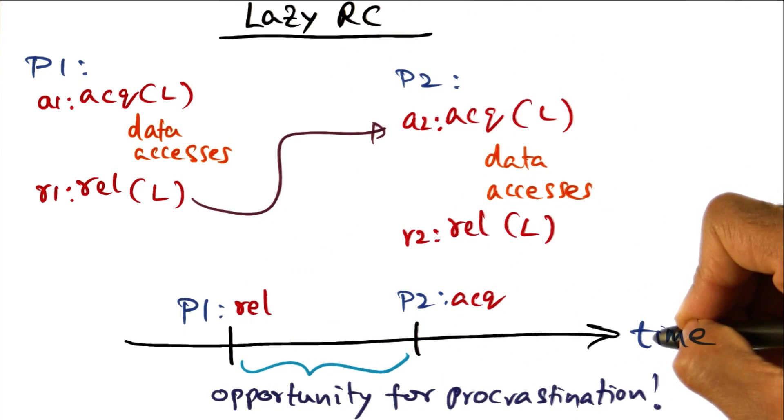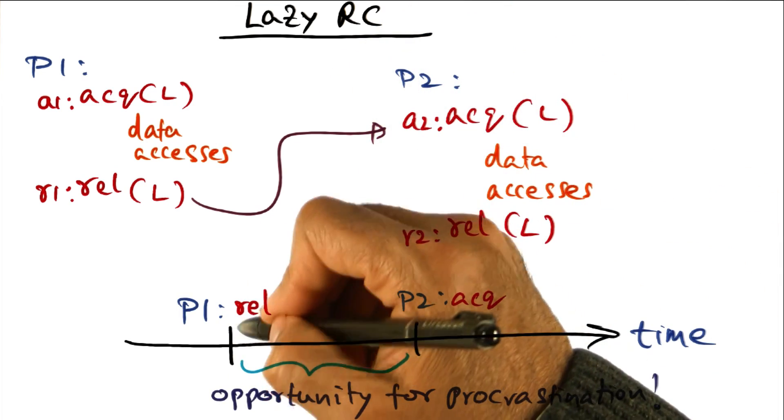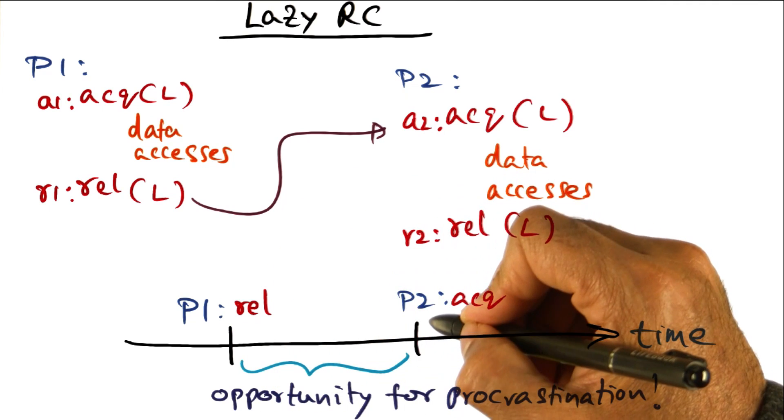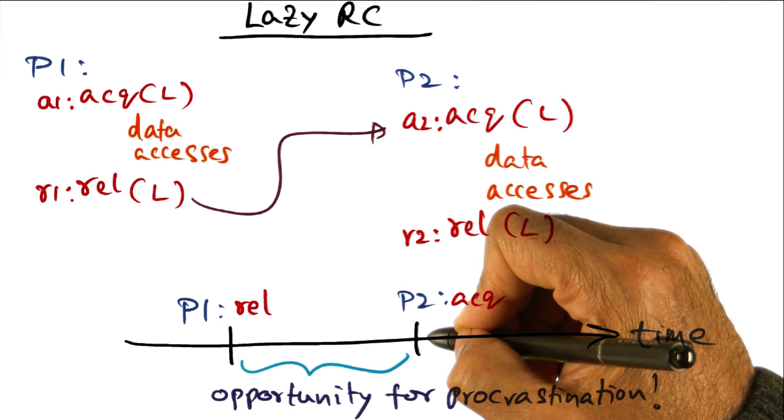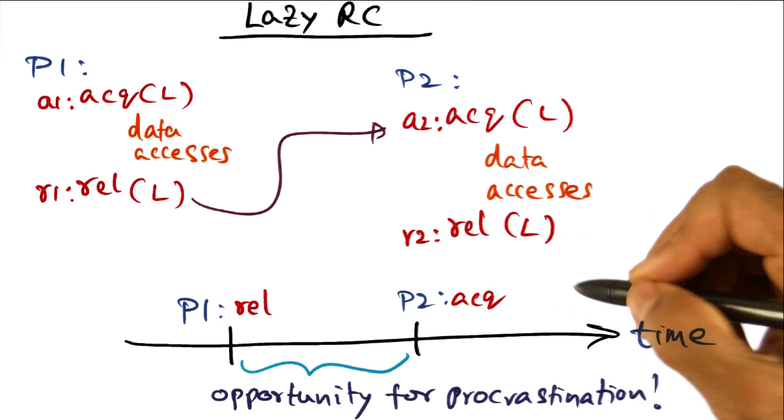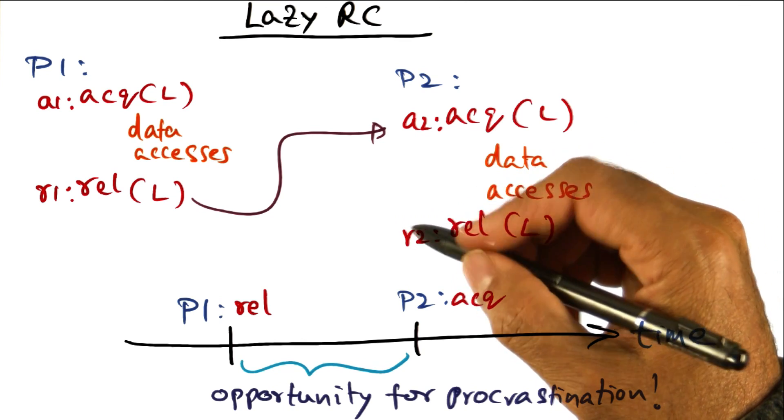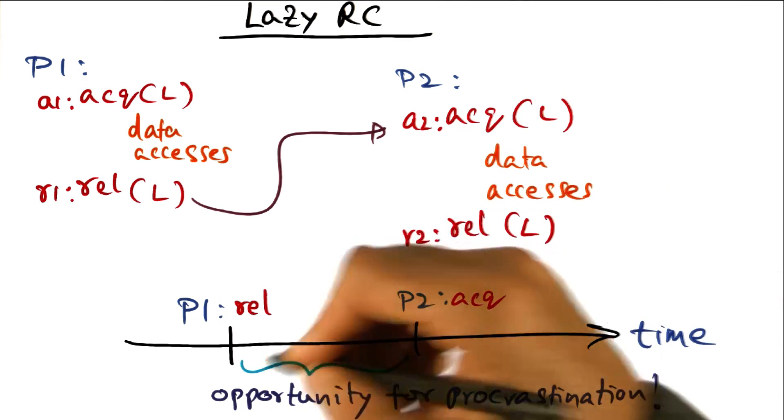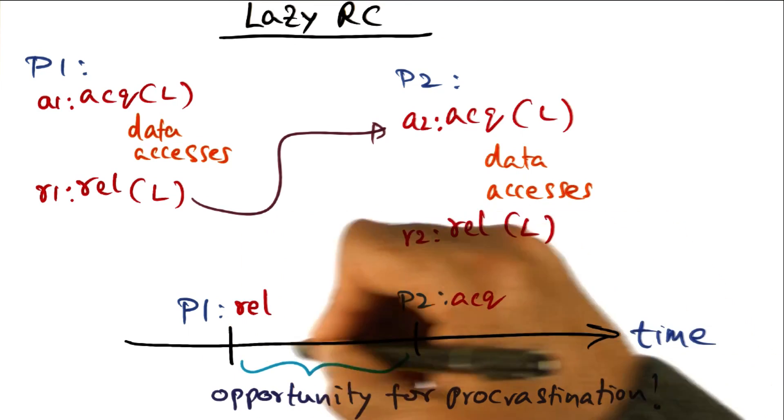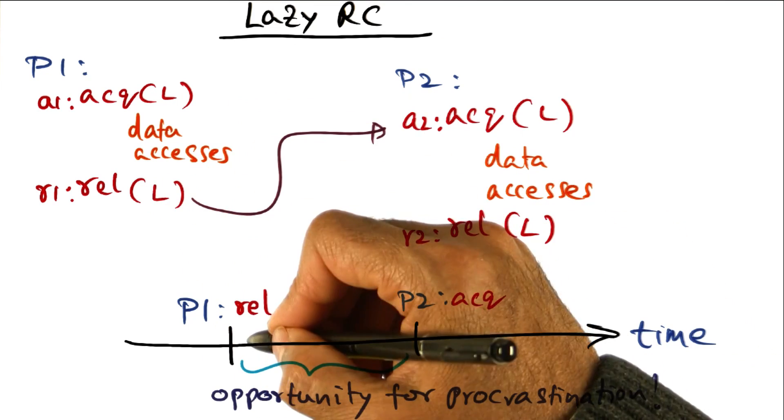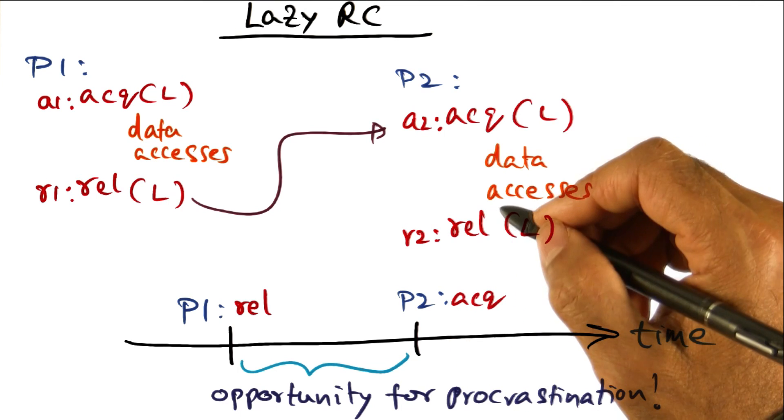Now let's say that the timeline looks like this, and P1's release of the lock and P2's acquire of the same lock happened at a much later point in time. That's the luck of the draw in terms of how the computation went, and so there is this time window between P1's release of the lock and P2's acquisition of the same lock.